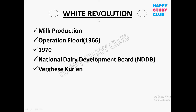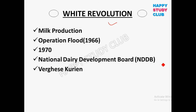Next is the White Revolution, which is a very important revolution in India. It was introduced for milk production in India and is also known as Operation Flood, which was started in 1966. The White Revolution was introduced in the year 1970. The National Dairy Development Program is the world's largest dairy development program, and India surpassed the US in milk production in 1988.